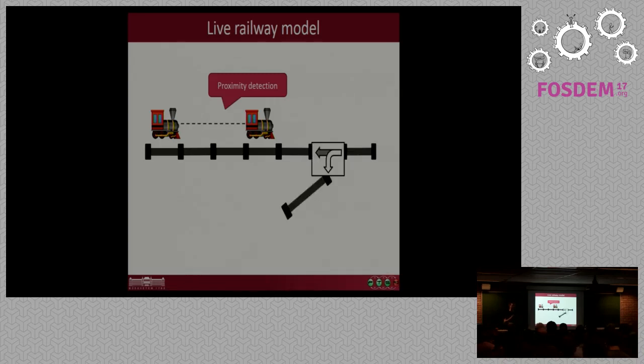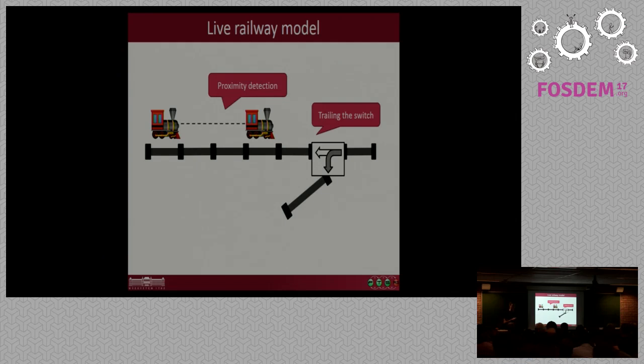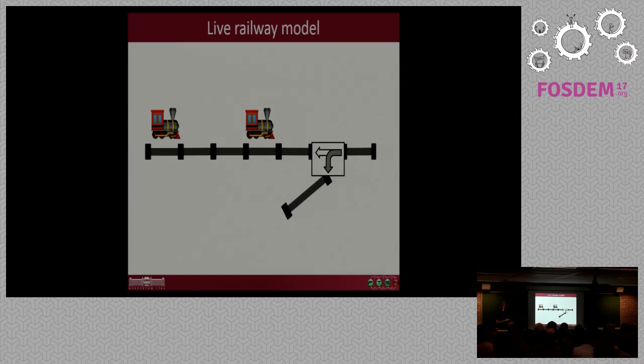Also in this system there might be switches that navigate the trains and there is an interesting constraint in railway networks: if the switch is set to a diverging position then the train cannot travel from the other direction because it might damage the switch. This is called trailing the switch. This is also something that we want to avoid because it damages valuable hardware.